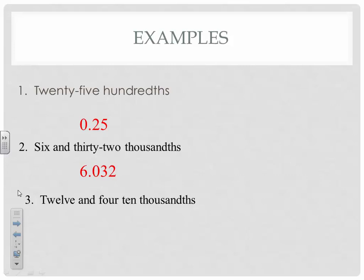The last one says twelve and four ten-thousandths. The four is in the ten-thousandths place, so the other places are left blank — but we can't leave blanks in math; zero represents nothing in those places, giving us 12.0004. Homework is the two pages you have on the back — a total of ten problems.